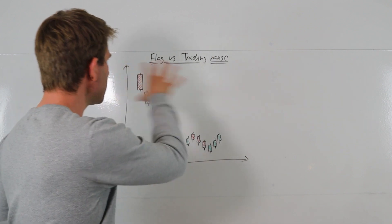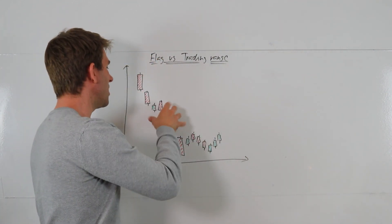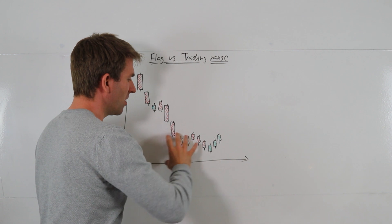So in this scenario here, you can imagine the prices moved lower, we've had a little pullback here, another drive lower, and now we've got this scenario.